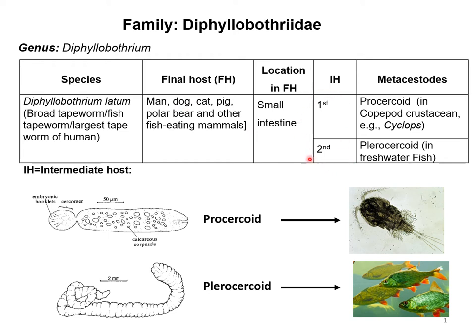There are two intermediate hosts. The first one is the copepod crustacean, that is Cyclops. Cyclops is one of the most common genera of freshwater copepods, comprising over 4,000 species. These individuals may range from 0.5 to 5 mm long and are mostly found in freshwater. Cyclops acts as the intermediate host for the completion of the life cycle of Diphyllobothrium latum and another parasite called Dracunculus medinensis, commonly known as Guinea worm.